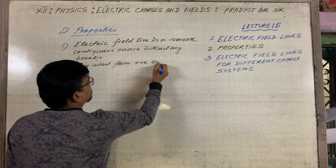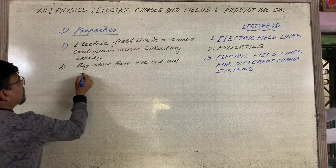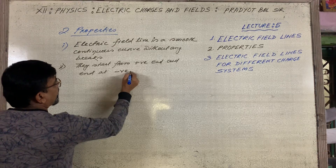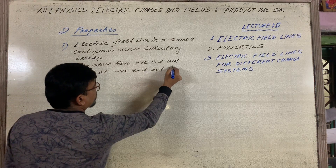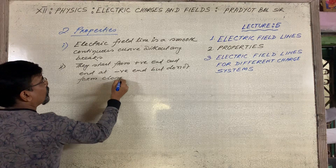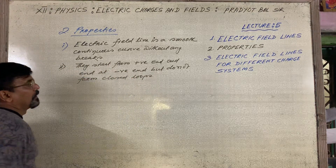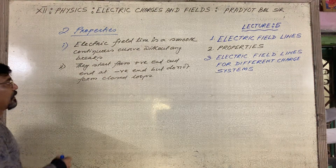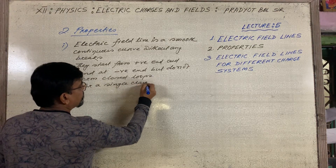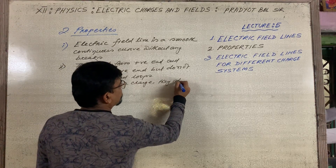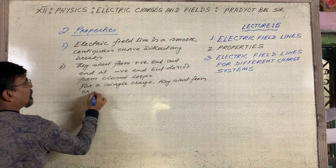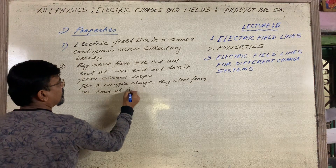Property number two: electric field lines start from the positive charge and end at the negative charge, but do not form closed loops. This is for a two-charge system. But for a single charge, they start from or end at infinity.